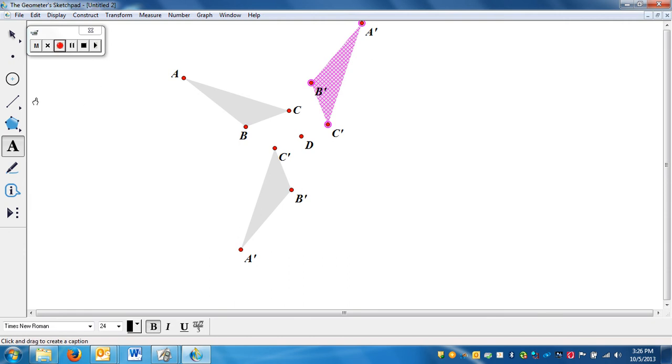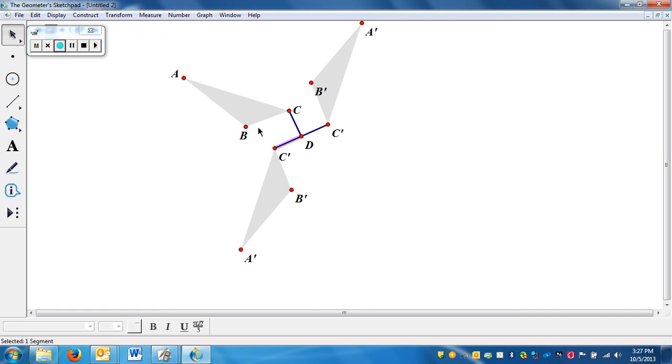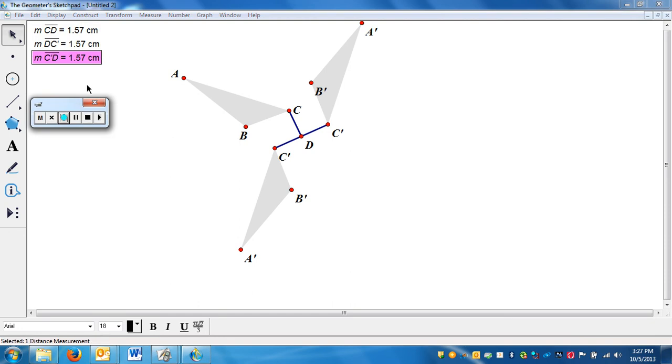Notice the distance from C to D and from C prime to D look the same, and they should be the same. So let's measure them. I'm going to measure that length. And notice, they're all the same.